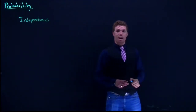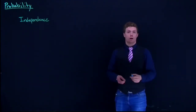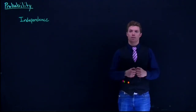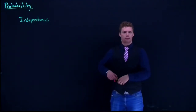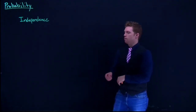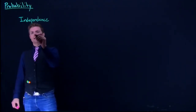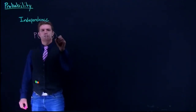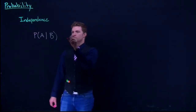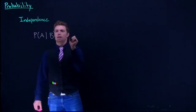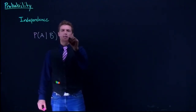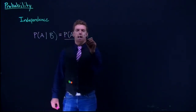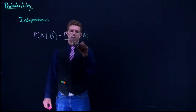We can use the concept of conditional probability to check whether or not two events are independent from one another. We can see where some things are very dependent straight from our conditional probability. Let's consider the probability of A given B. We know that the probability of A given B is equal to the probability of A intersect B divided by the probability of B.